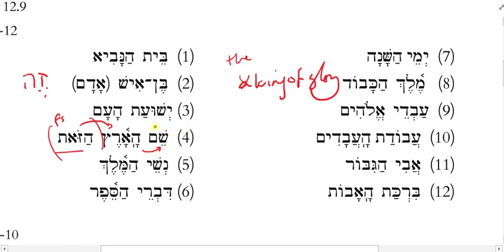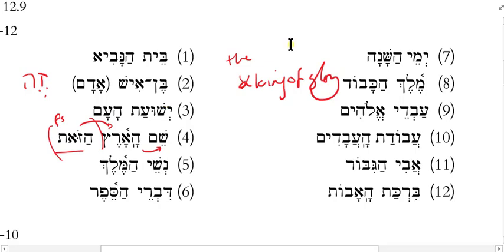So 'haaretz' is really important — that's what makes me translate this as 'the name of the land.' And then I add 'this.' How do I decide which form of 'this' to use? It's modifying 'land' — so what gender is 'land'? Feminine. So I need the feminine singular form: 'zot' rather than 'zeh.' And I add the article to it because both nouns of the construct chain are definite.